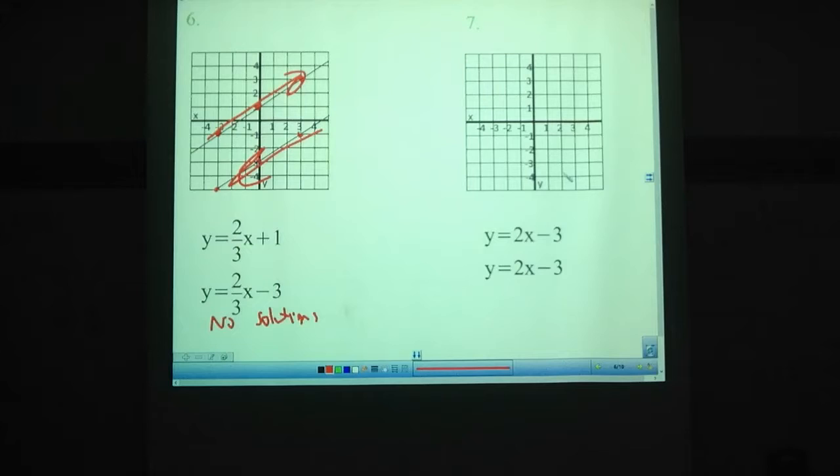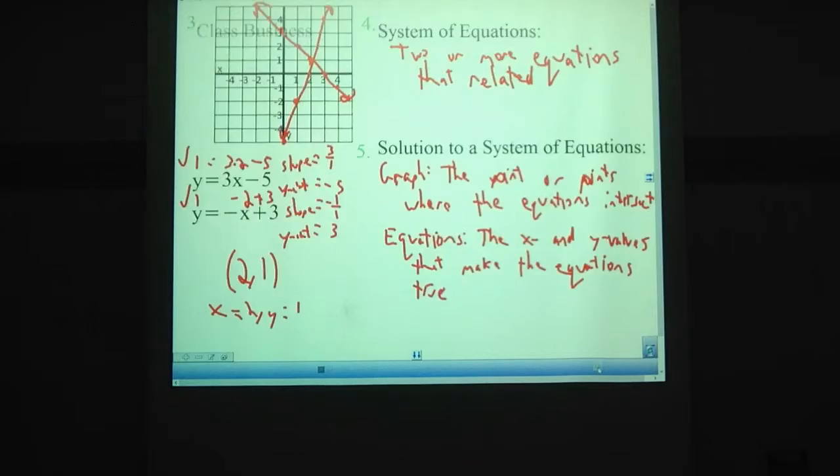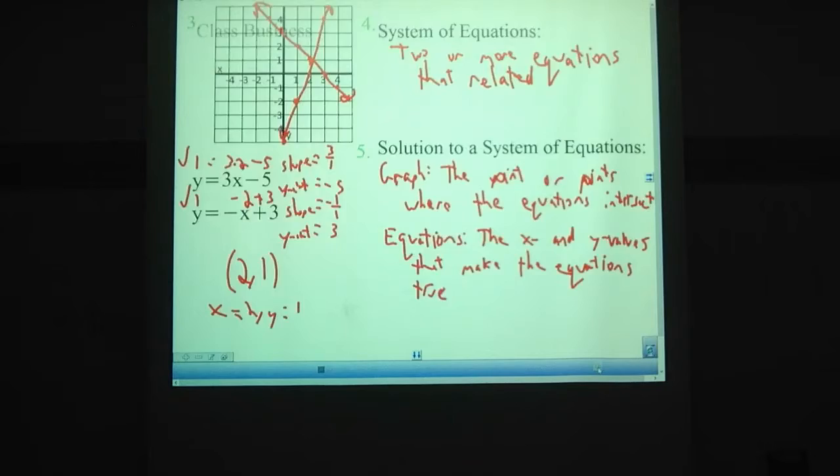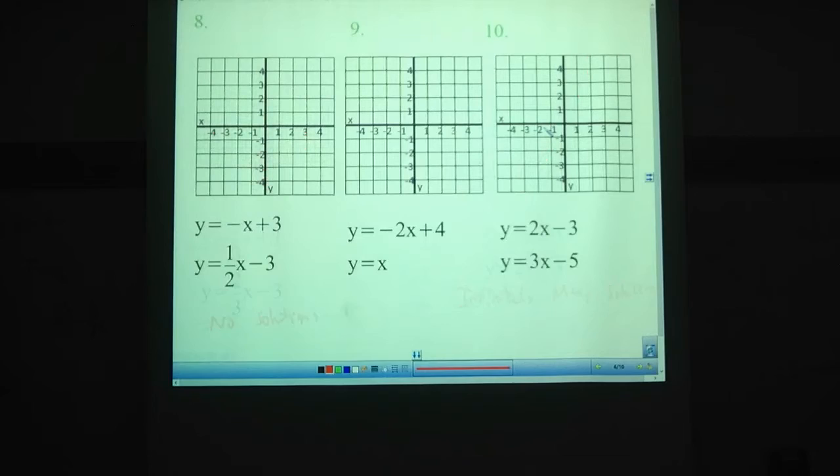Number seven, graphing these ones. Both of them have the same y-intercept and the same slope. Which means they're basically the same equation. So the solution is the points that are in common. And they have all points in common. That means there are infinitely many solutions. However, it is not all real numbers. For each x, there's a specific y you must have.